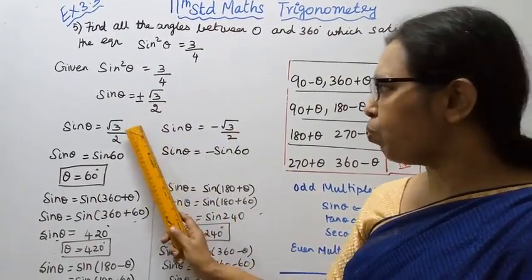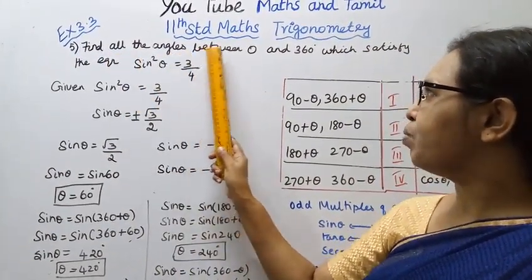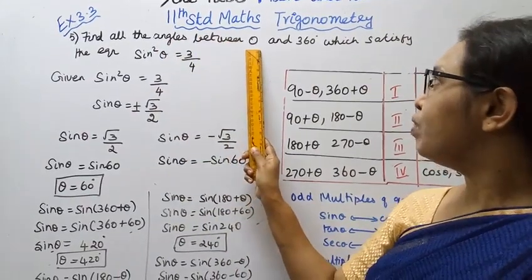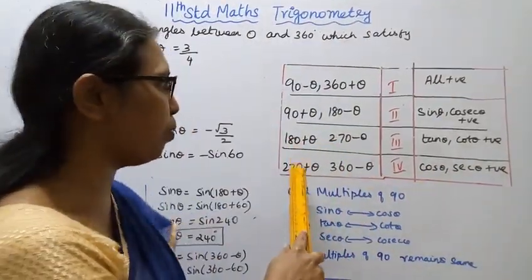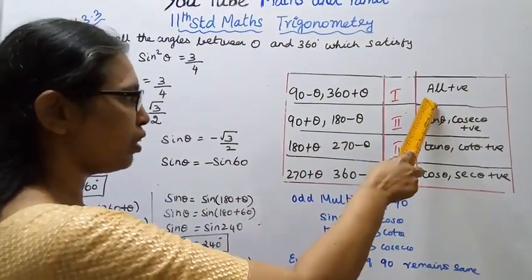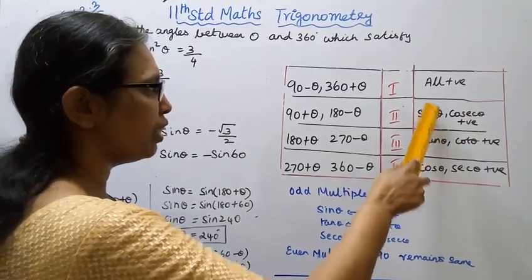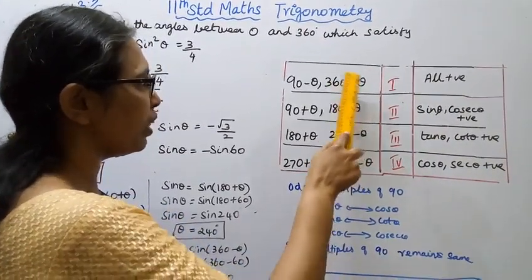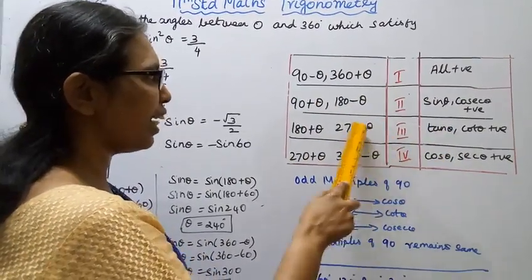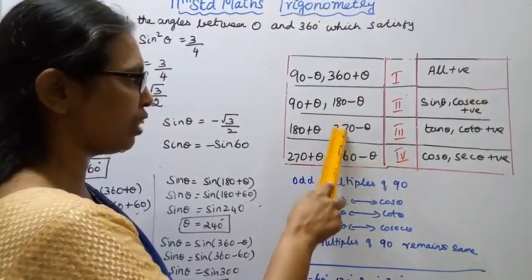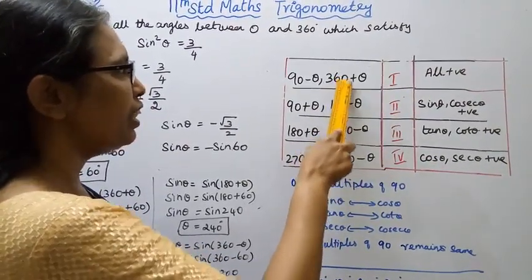The positive and negative cases are the same to handle. To find the angles between 0 and 360, we apply the important ASTC rule. All are positive in the first quadrant. Sin theta is positive in the first and second quadrants. Sin theta is negative in the third and fourth quadrants.